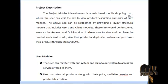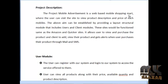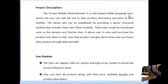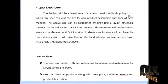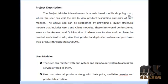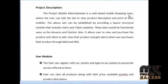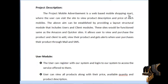The project Mobile Advertisement is a web-based mobile shopping mall where users can visit the site to view product descriptions and prices of each mobile. This site functions the same as Amazon and Quicker sites. It allows users to view and purchase products, and allows clients to add and view their products and get alerts via mail and SMS when a user purchases their product.